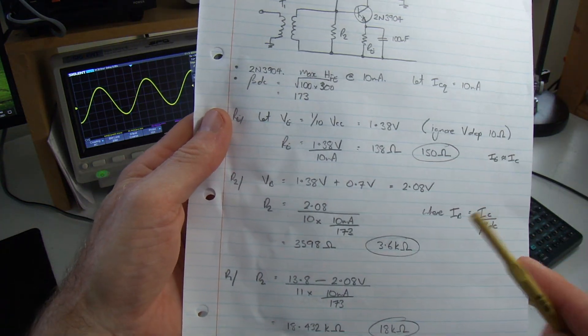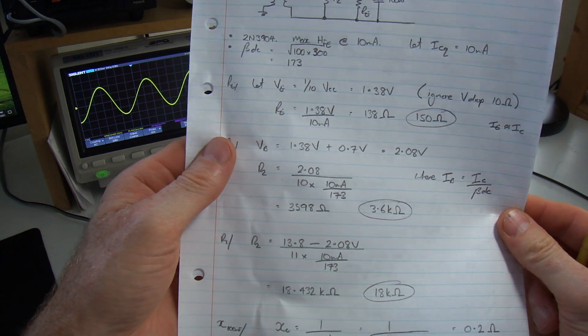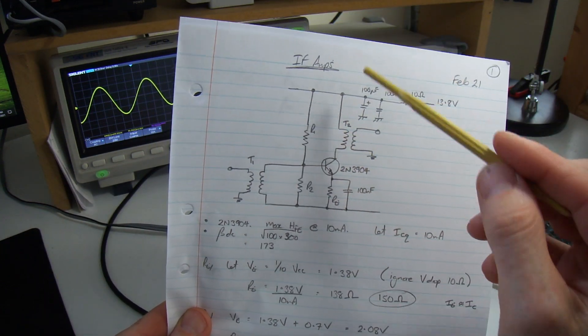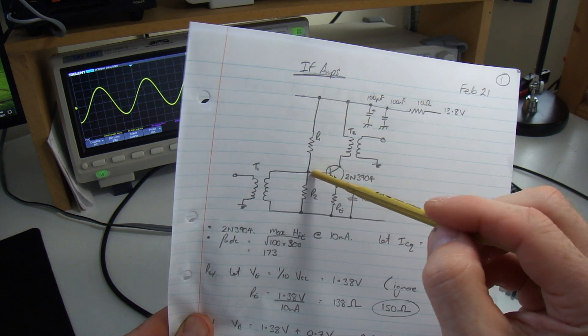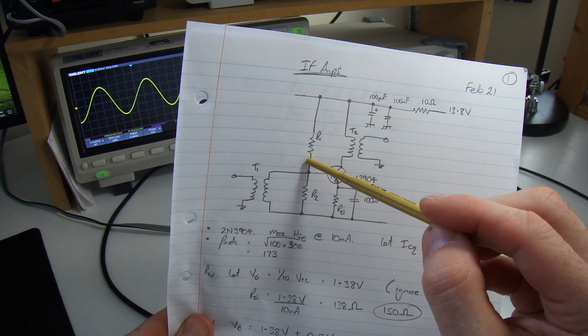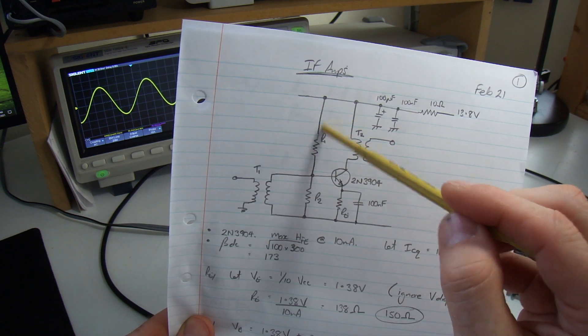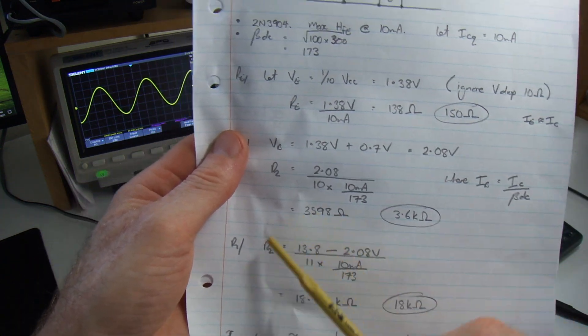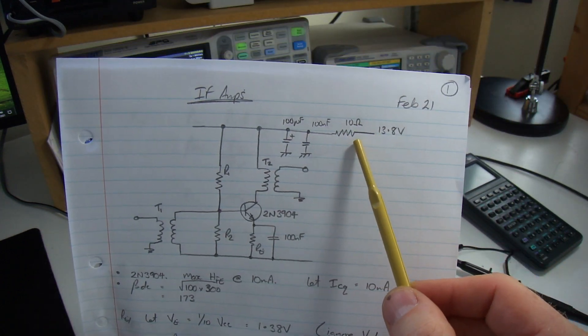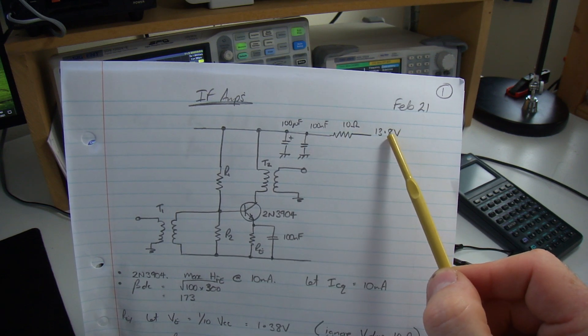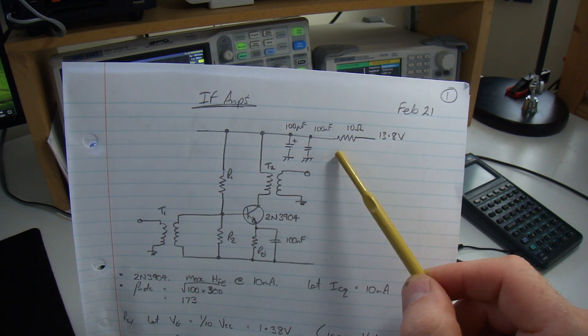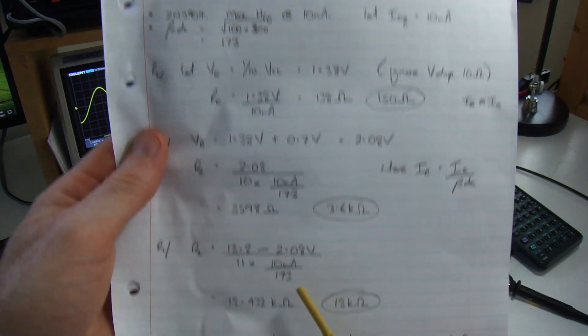If no one's interested in these calculations, please skip forward. At the very end I've got a quick test. But for those who are interested, this is the approach that I take, right or wrong. So the next one I'm working out is R1. Same deal. Voltage there minus the voltage there gives me the voltage across it, divided by 10 times the base current through here plus an additional base current gives you 11 times the base current.